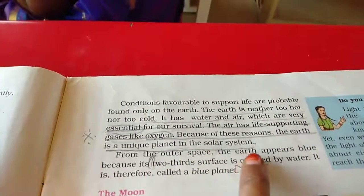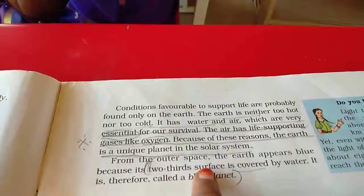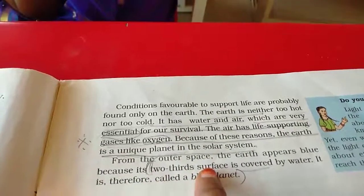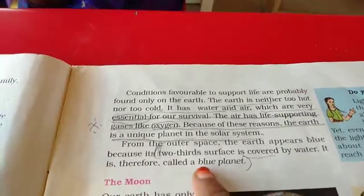From the outer space, the earth appears blue. Because its two-thirds surface is covered by water. It is therefore called a blue planet. We can call the earth as a blue planet too.